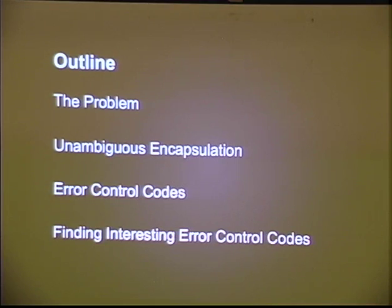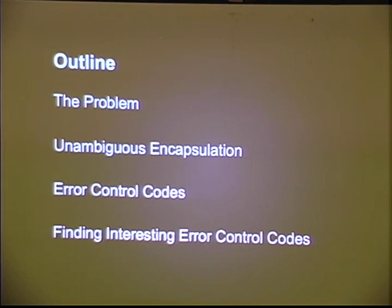You've probably seen this on a lot of Cyber Fast Track supported projects, so we are glad to be among them. The problem is encapsulating data within other data, what we mean by unambiguous encapsulation and why we think it's important. Then we're going to talk quite a bit about error control codes and explain why we think that's important to this project, although the concept of unambiguous encapsulation goes far beyond that.